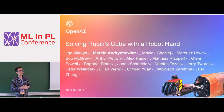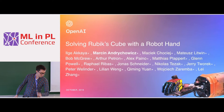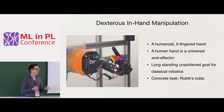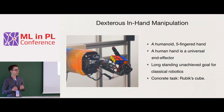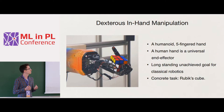My name is Marcin Andrychowicz, and in the first part of this talk I'm going to present a project I worked on when I was at OpenAI. It was a pretty huge effort, took more than two years, and at the end there were almost 20 people working on it. The goal was to perform dexterous in-hand manipulation on a humanoid five-fingered hand. It's an important problem because the human hand is a universal end effector, and despite its importance, quite little progress has been made because it's very hard to devise control policies for such complicated robots.